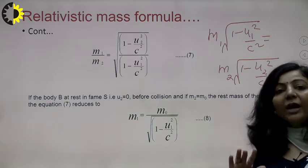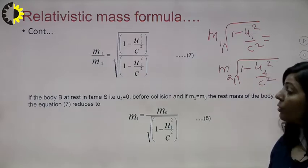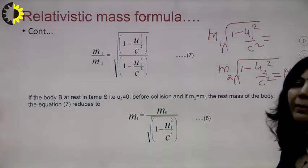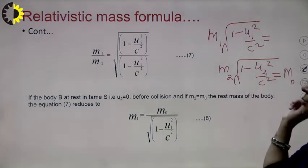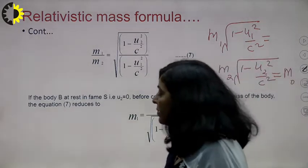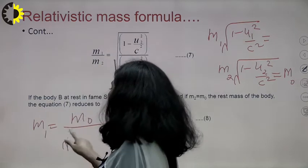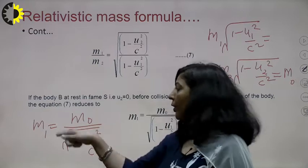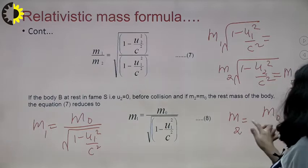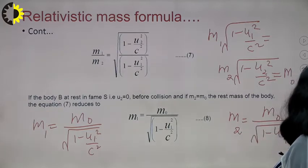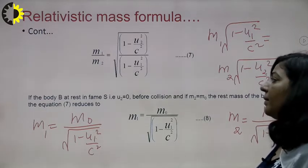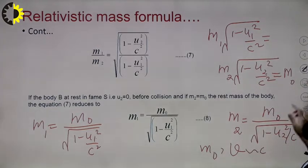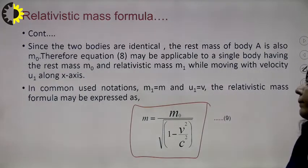The left-hand side belongs entirely to the first particle and the right-hand side to the second. Both sides have dimensions of mass, are independent of each other, yet the equation shows they are equal — which is possible only if both equal a common term. That common term is the rest mass. So for the first particle: M1 = M₀ / √(1 - U1²/C²), which is the relativistic mass formula.